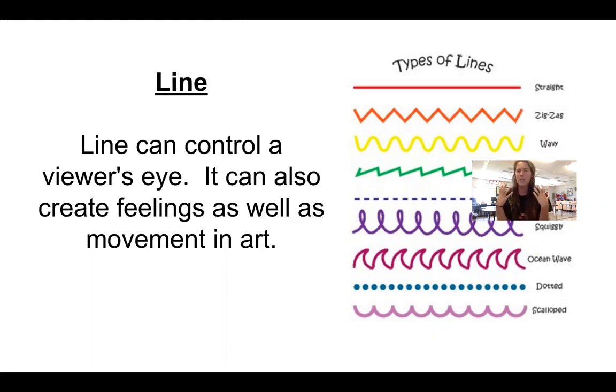So for example, if you see a scribble scrabble, you can kind of sense the feeling of the person who made that scribble. They might have been mad. They might have been really silly. So you kind of get a sense of feeling when you do see certain line types.